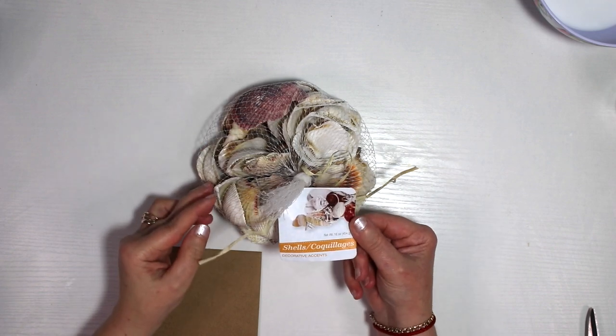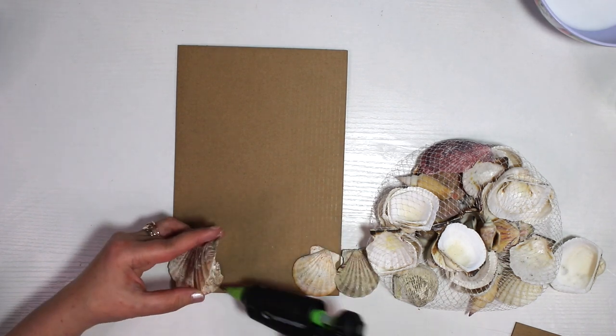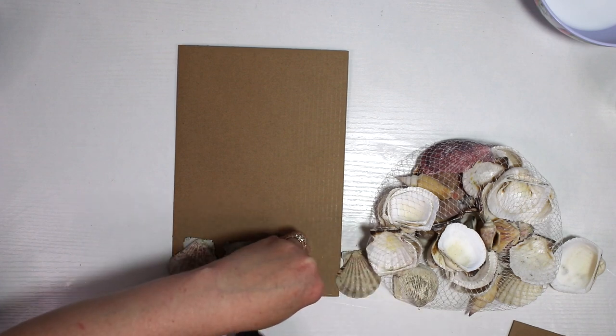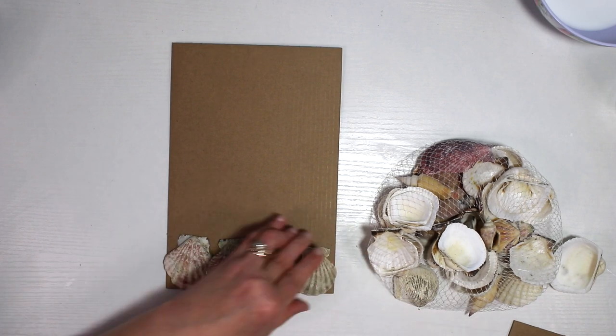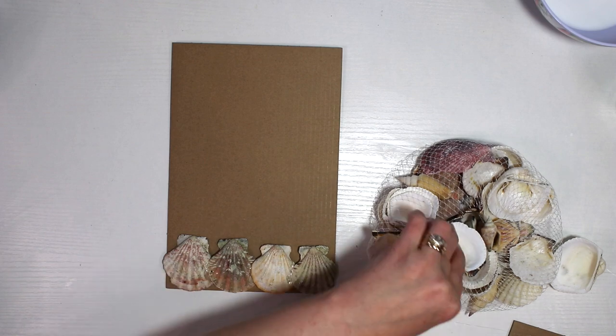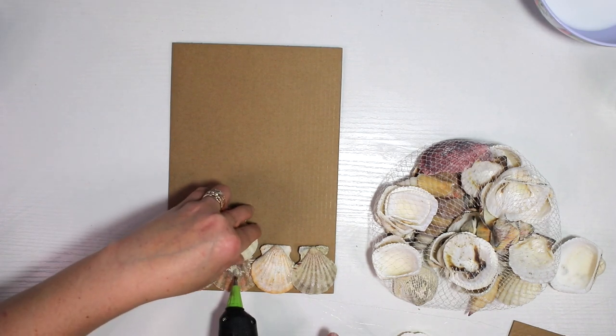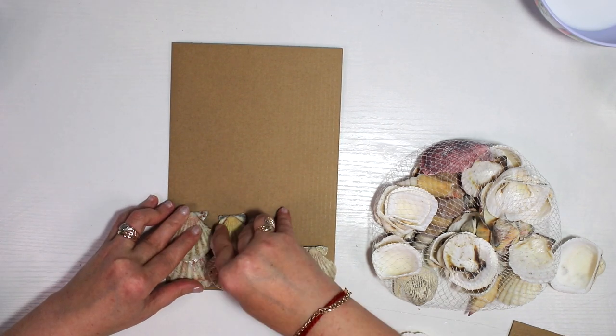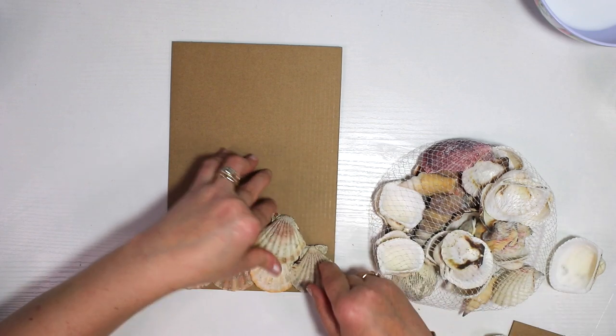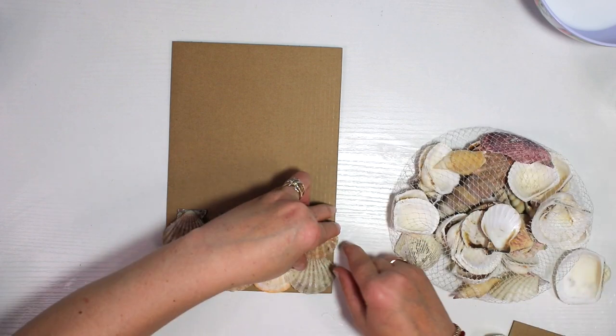For this project I used some seashells from Dollar Tree. I actually didn't have enough of the same kind, which was kind of making me mad, but at the end it actually turned out pretty cool because I had enough to make two sides the same and two sides a little different. I started gluing the seashells together—I did like four in a row, then went up. The cardboard is laying on the table and this is where I placed my seashell. This is just giving me size measurements so I don't go too far and one side's bigger or smaller.